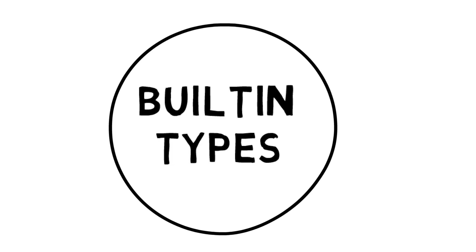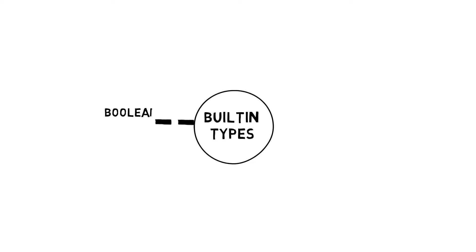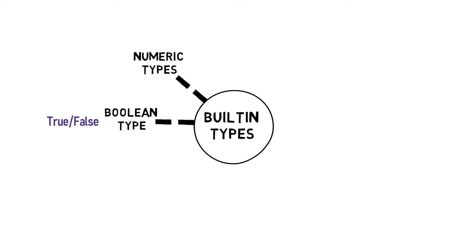Let us have a look at different built-in types in Python. First, we have the boolean type, which is nothing but the values true and false. Next we have numeric types, which includes integers, float, and complex numbers.